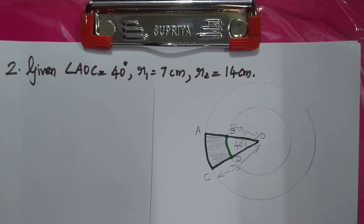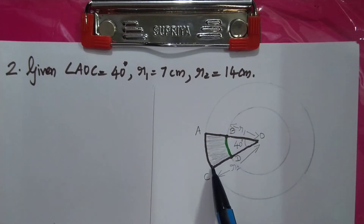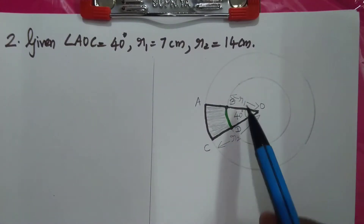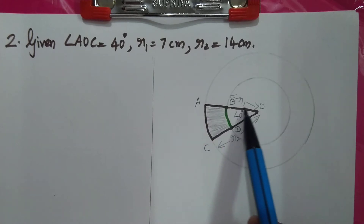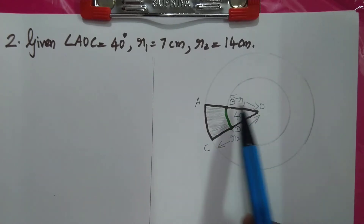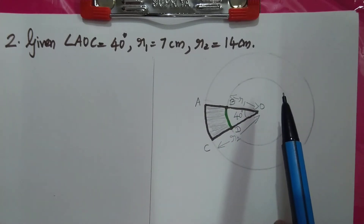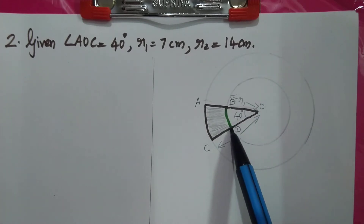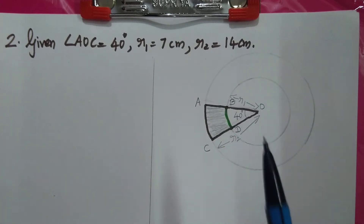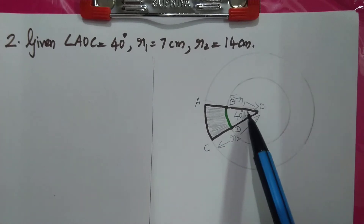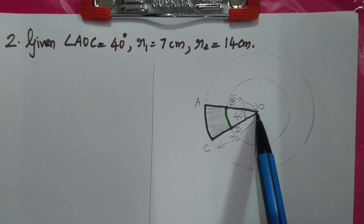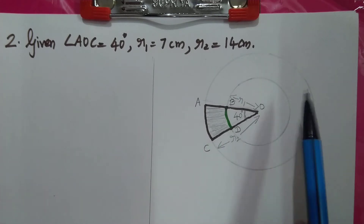The angle AOC is 40 degrees. The formula for the area of a sector is theta by 360 into pi r squared. For sector AOC, the radius is 14 cm. For sector BOD, the radius is 7 cm. So R1 is 7 and R2 is 14.